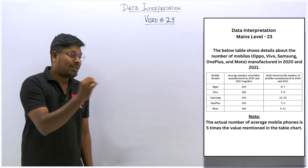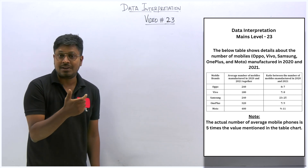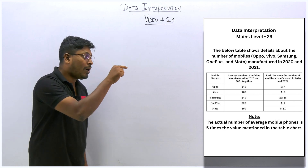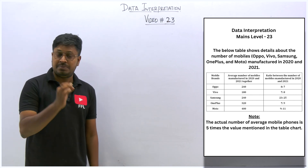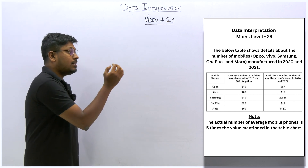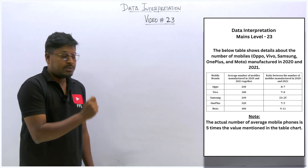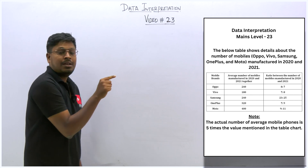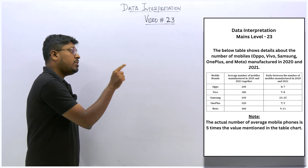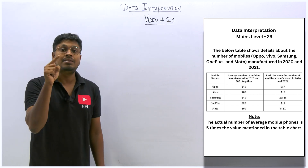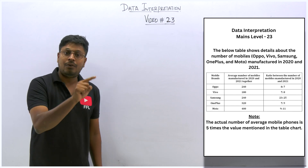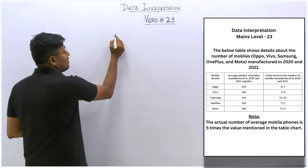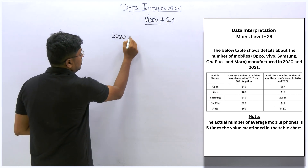Here they have given a note: the actual number of average mobile phones is five times the value mentioned in the table chart. So the value shown in the chart is not the actual value — the actual value is five times what is given. For example, take the mobile brand Oppo. The average number of mobile phones manufactured in 2020 and 2021 is shown as 240 in the table, but that is not the exact number.